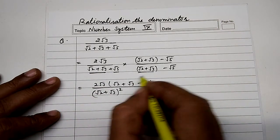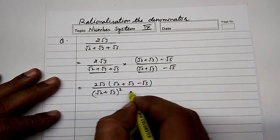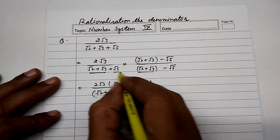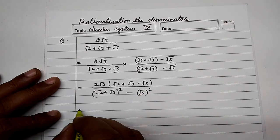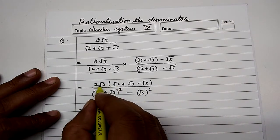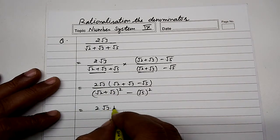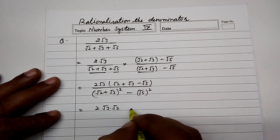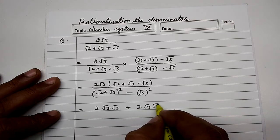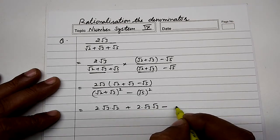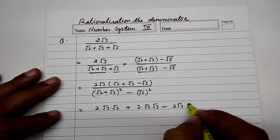Expanding the numerator: 2√3 multiplied by (√2 + √3 − √5) gives 2 × √3 × √2, plus 2 × √3 × √3, minus 2√3 × √5. This simplifies to 2√6 plus 2 × 3, minus 2√15.